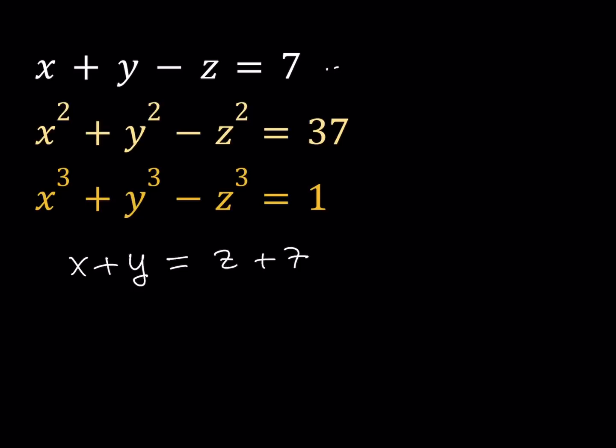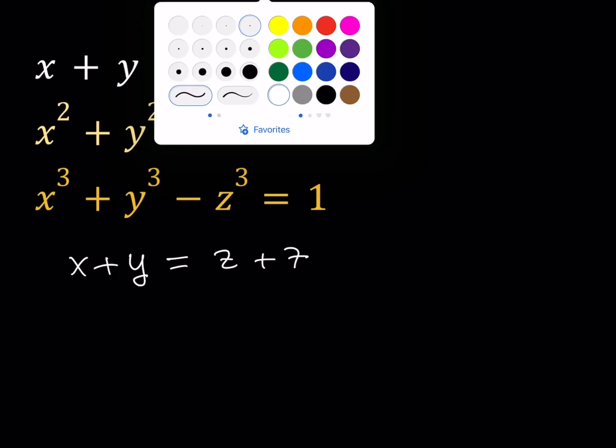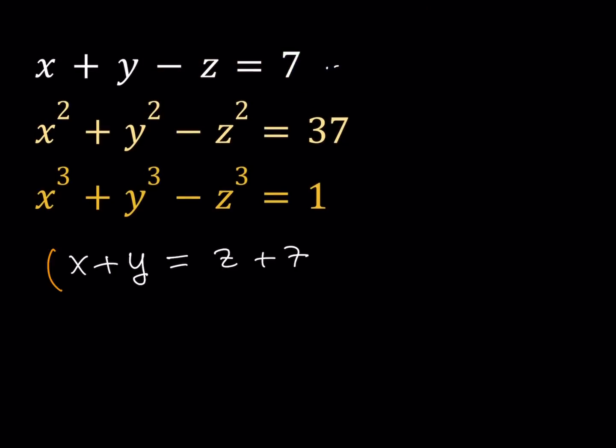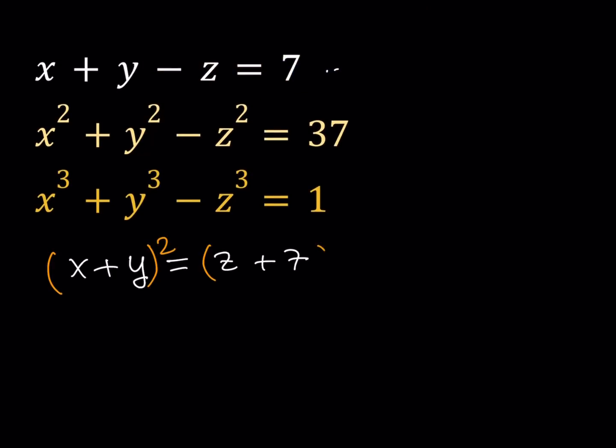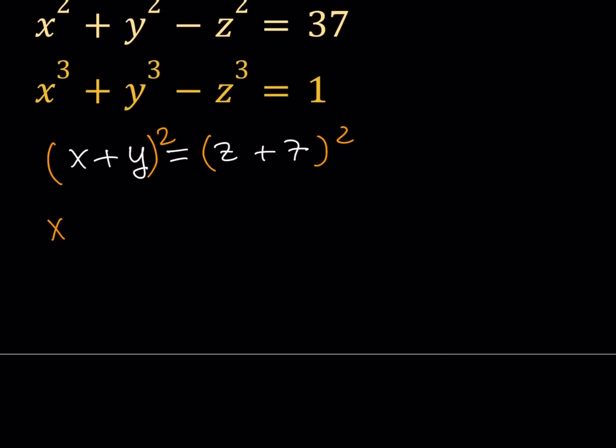And then, since I want to use the other equations, starting with the second one, I will square both sides. Let's go ahead and do that. I will square both sides. And that gives me x squared plus y squared plus 2xy equals z plus 7 squared, which is z squared plus 14z plus 49.